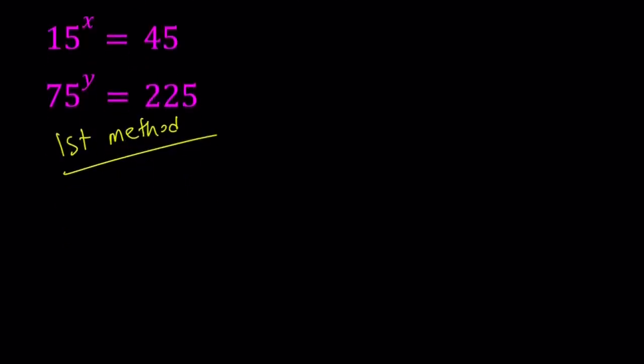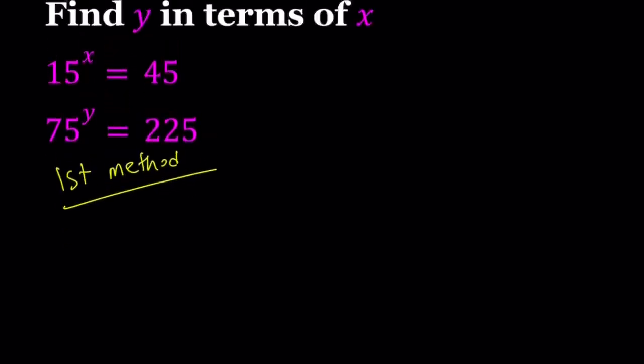For my first method I'm going to use the rules of exponentials and I'll break down everything into its prime factors. So 15 can be written as 3 times 5. So 15 to the power x can be written as 3 to the power x times 5 to the power x. And on the right hand side we can write the 45 as 9 times 5 which is 3 to the second times 5 to the first power.